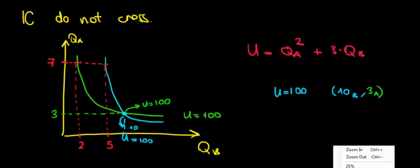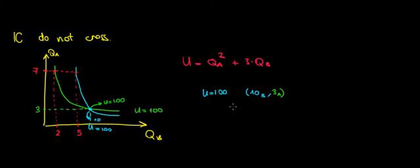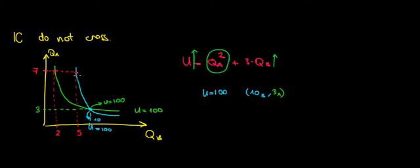Let me zoom out and prove it with the math. We have the same level of quantity of apples — that number is the same — but now we have more quantity of bananas, so this term is increasing. If this term is increasing, the total utility also increases. If we show that this higher utility intersects the previous one, we're claiming they're equal — but we just showed with math that they cannot be equal.